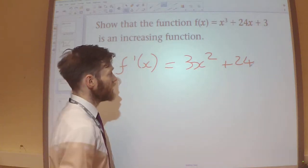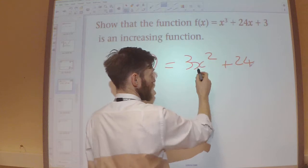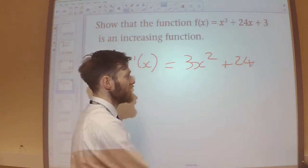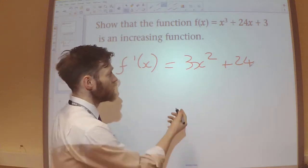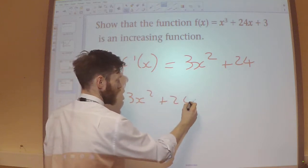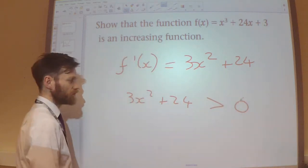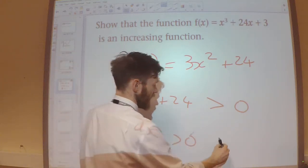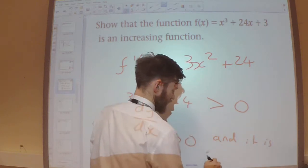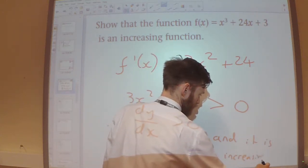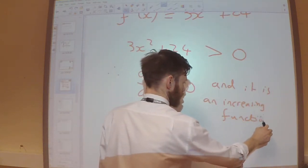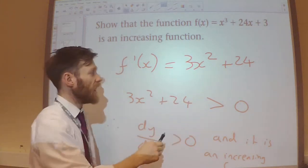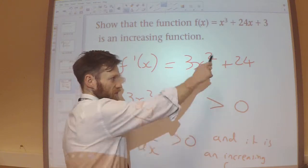So this is my gradient function. Now, x squared is always going to be positive, so multiplying that by 3, that's always going to be positive. Adding the 24, that will always be positive. So 3x squared plus 24 is always positive, therefore dy/dx is always positive, and it is an increasing function. It doesn't matter what value of x I substitute in here — this will always give me a positive value.